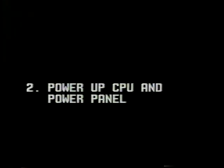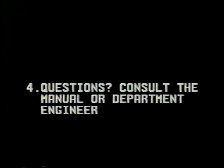Here's a quick review of how to get started. Get the key from the tech room and unlock the security panel. Power up the CPU and power panel — this automatically powers up the user control panel and the effects switcher. Turn on all VCRs and be sure they are in remote. If there are any problems, please get the department engineer or consult the manual.